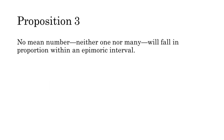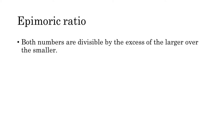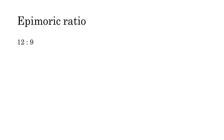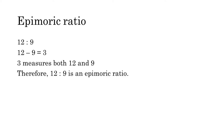No mean number, neither one nor many, will fall in proportion within an epimoric interval. This might be the most important of the mathematical propositions, so it's worth going into at length. Take two numbers that stand in an epimoric proportion. An epimoric ratio is one where both numbers are divisible by the excess of the larger number over the smaller — in other words, all epimoric ratios can be reduced to a pair of consecutive whole numbers. For example, take the ratio 12 to 9. The excess of 12 over 9 is 3, which measures both terms of the ratio, so this is an epimoric ratio. 12 to 9 can be reduced to 4 to 3, a pair of consecutive numbers.